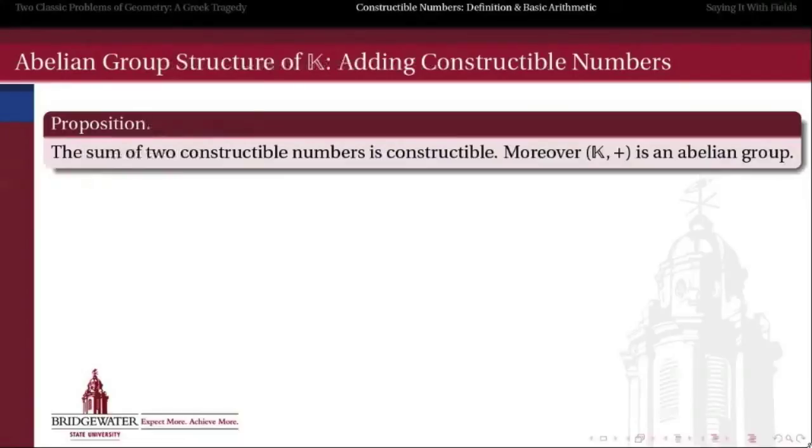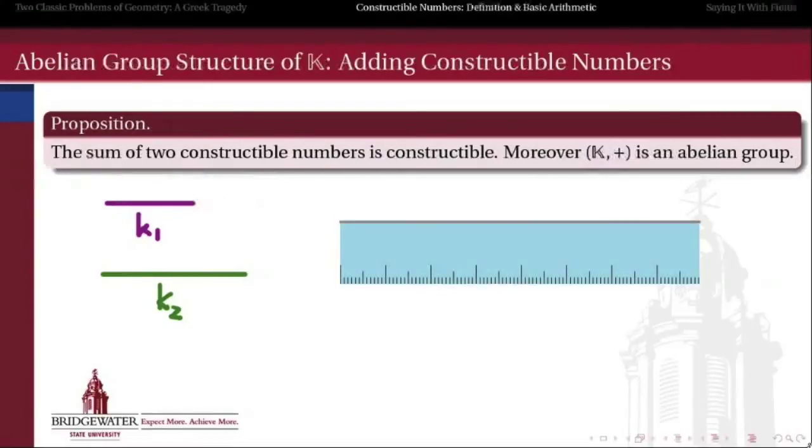First of all, we can add them and we can subtract them. So this proposition says that the constructible numbers are an abelian group with the operation of addition. How do we do that? Well, we can add two constructible numbers if I have k1 and k2 both constructible. All I have to do is take a straight edge and lay out one long line, and then just place k1 and k2 adjacent to one another like this, and the total length that we get there is the sum of k1 and k2.